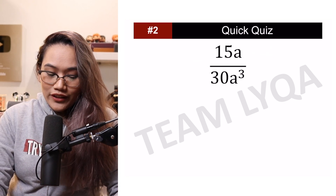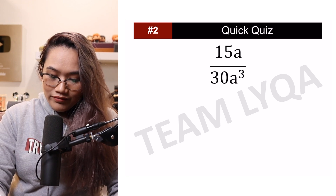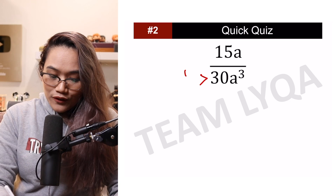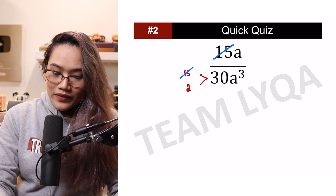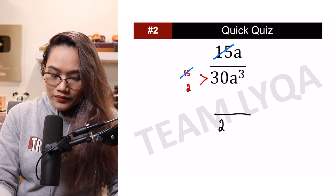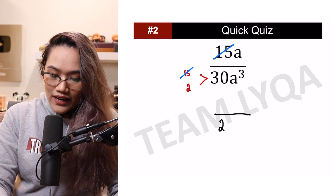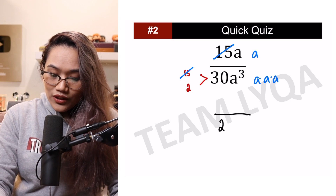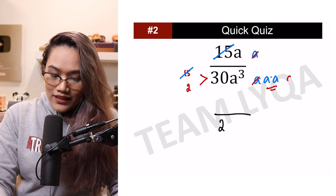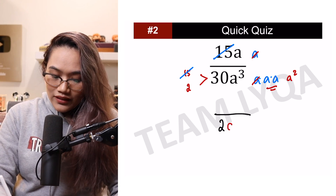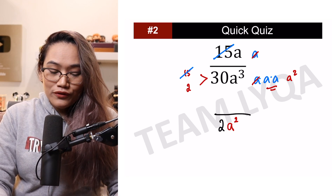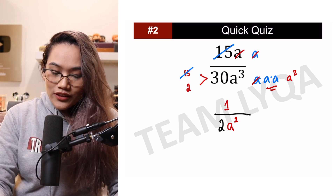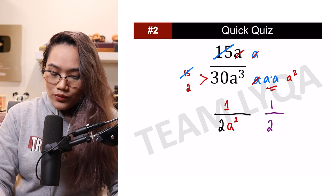Number 2: 15a over 30a cubed. Yung 15, this is 15 times 1. 30 can be split into 15 times 2. Which means pwede ko na i-cancel yung 15 dito sa itaas at 15 sa ibaba. May iiwan sa ilalim yung 2. Yung a naman, meron akong a sa itaas na isa lang, sa ilalim tatlong a. At kung ika-cancel ko ito, may iiwan na dalawang a sa ilalim — this is a squared, na ilalagay natin sa ilalim din. Now, anong mangyayari sa itaas? Dahil na-cancel both yung 15 at yung a, this will be 1. So the answer is 1 over 2a squared.